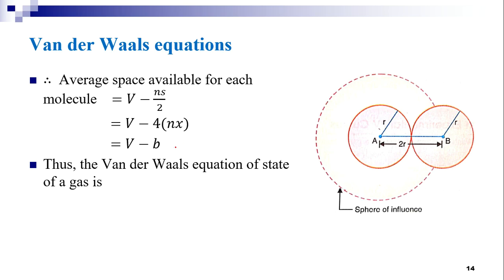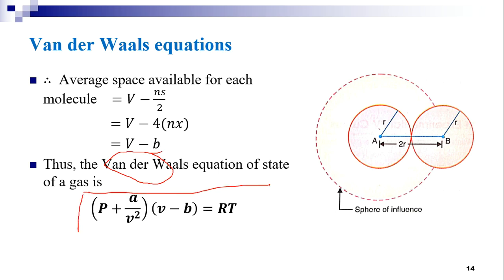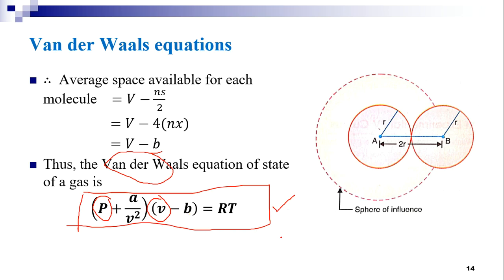Thus, the Van der Waals equation of state of a gas is given by (P + a/V²)(V − b) = RT. Van der Waals made corrections for both the pressure term and the volume term, and a and b are called the Van der Waals constants.